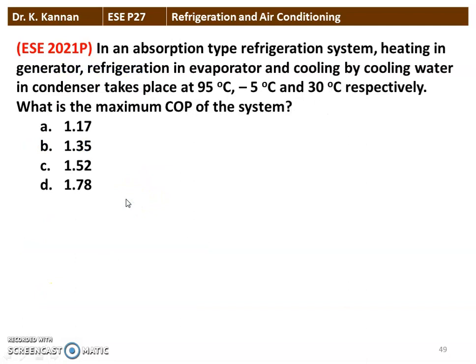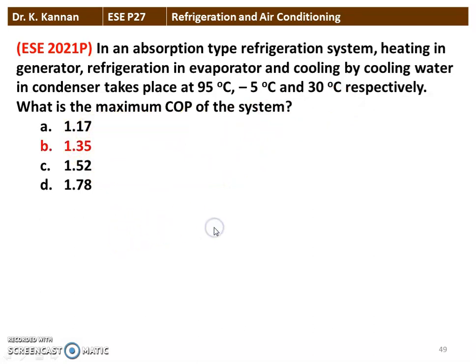The next question from the 2021 question paper: In an absorption type refrigeration system, heating in the generator, refrigeration in the evaporator, and cooling by the cooling water in the condenser takes place at 95 degree Celsius, minus 5 degree Celsius, and 30 degree Celsius respectively. What is the maximum COP of the system? There are 4 options given here. The correct answer is 1.35. We will see how in the next slide.